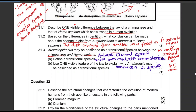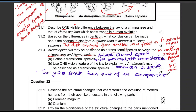Let's write it down: the jaw is smaller than that of the chimpanzee but larger than that of Homo sapiens — two marks. If you spoke about the canines, you would say the canines of Australopithecus afarensis are smaller than those of a chimpanzee but larger than those of the Homo sapien.